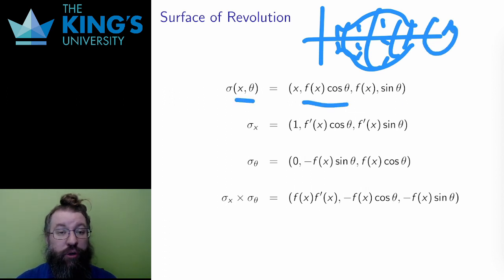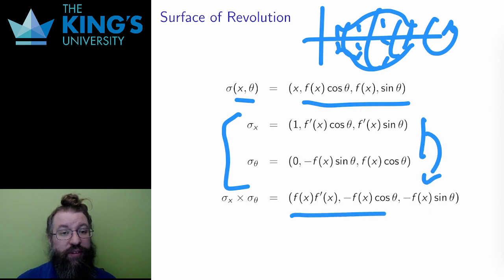Again, I take the two partial derivatives, first in x and the second in theta. Then I take the cross product, which produces this normal. This is a little bit different to interpret, but it is the outward direction from this surface of revolution, tilted however it needs to be tilted depending on the graph of the function.